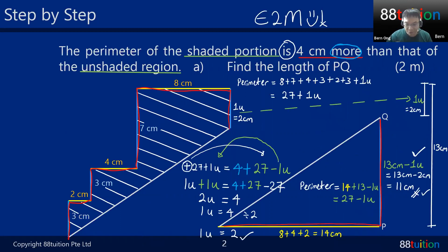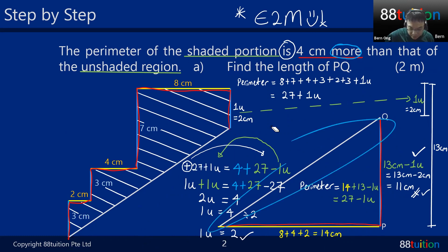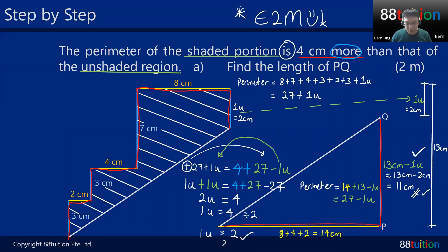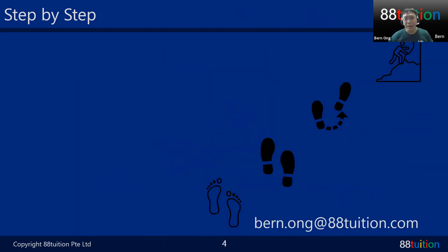The PQ part was the trickier portion. Once you can find PQ — thanks to the E to M (English to Math) method, knowing where the perimeter is, and recognizing that the overlapping portions cancel out — and knowing 'here and there', you can solve this. I find this one of the toughest questions in the PSLE 2021 paper.